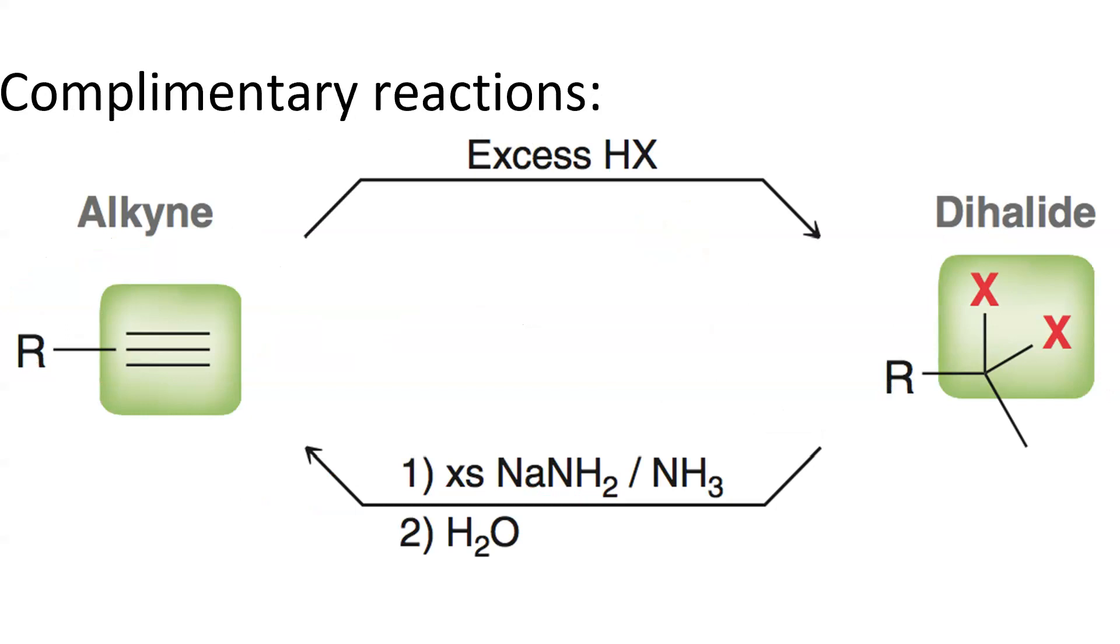But now, we have a way to shuttle back and forth between an alkyne and an alkyl dihalide. We react the alkyne with excess haloacid to get the dihalide. That's the upper pathway here. We can then take the dihalide and react it with excess sodium amide followed by water to go back to the alkyne.